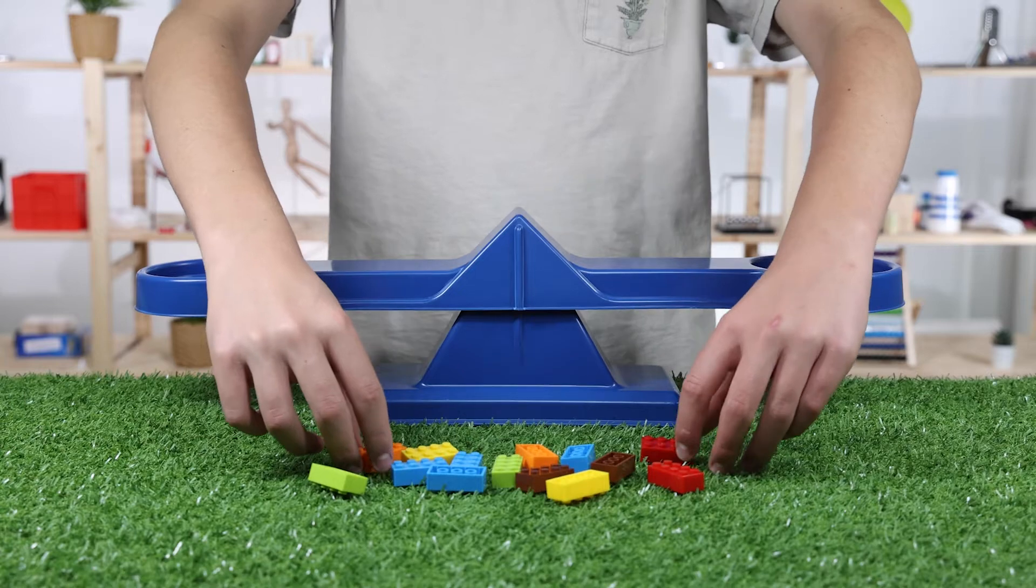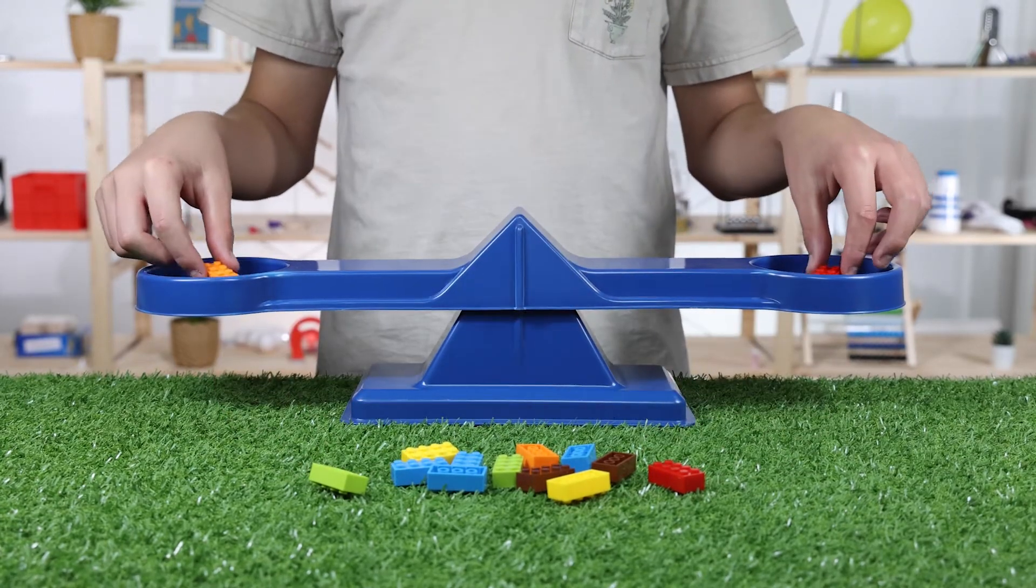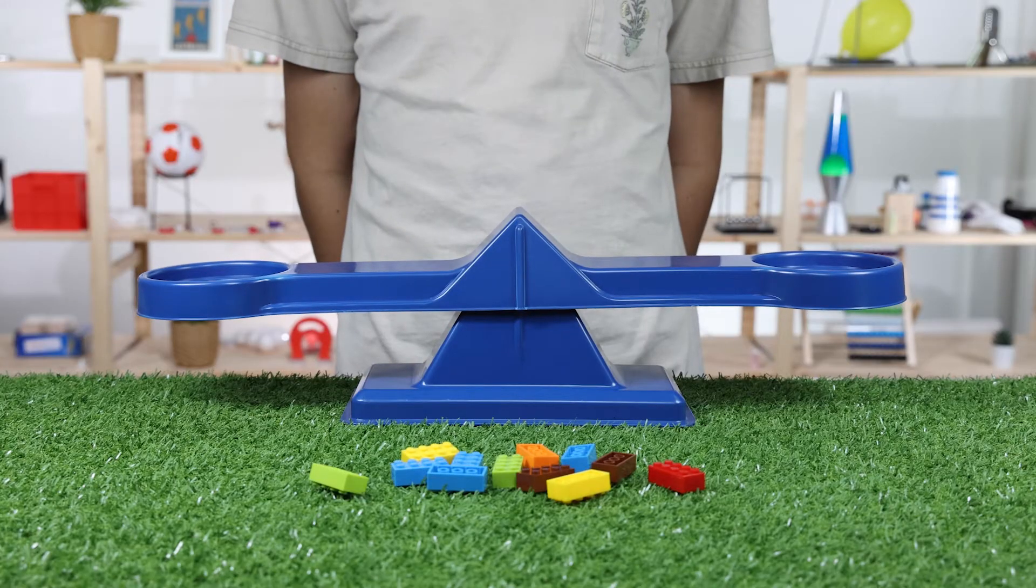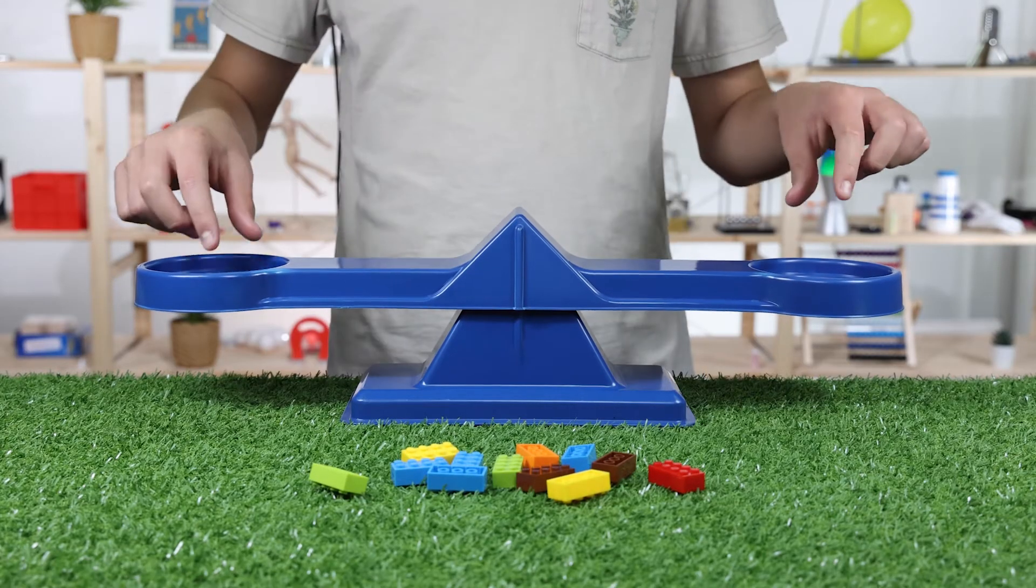When we put one block on one side of the balance and one block on the other side, we can see that the masses of each block is the same.